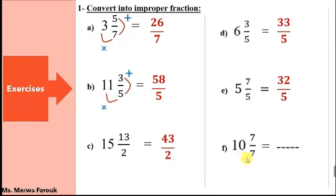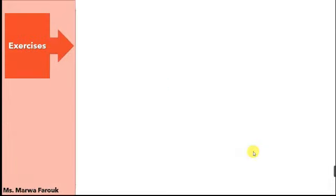Next: 10 and 7 sevenths — 10 times 7 equals 70, and 70 plus 7 equals 77, so we get 77 over 7. The denominator doesn't change.